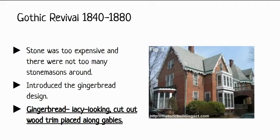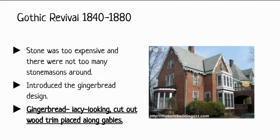They also introduced the gingerbread design, and this is what they're really known for. You had the pointed arches and circular windows, but really they were known for the gingerbread design. Typically you can identify a Gothic Revival house when it has this type of decorative woodwork — it looks like icing on a gingerbread house. It usually trimmed the whole house up through the roof and over on the side roofs as well. That gingerbread is a lacy-looking cutout made out of wood, placed along all the gables and the roofline — so instead of a cornice, they had gingerbread.